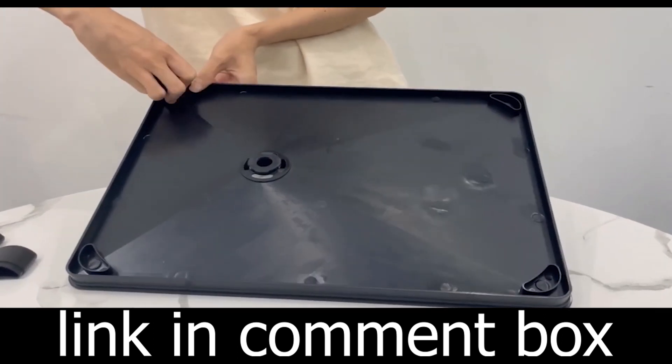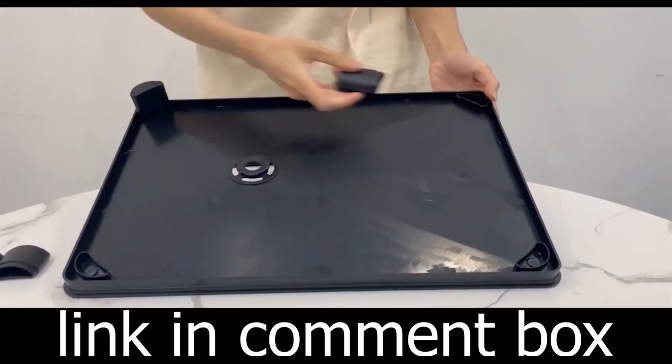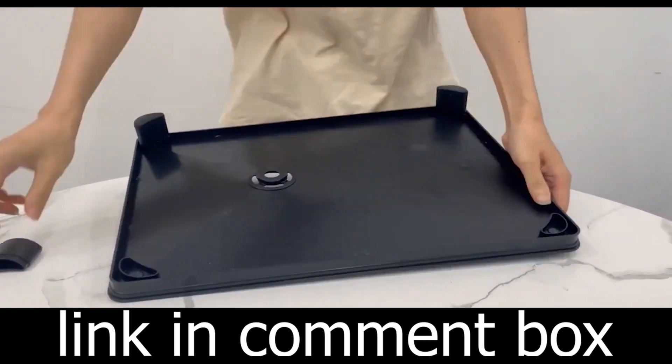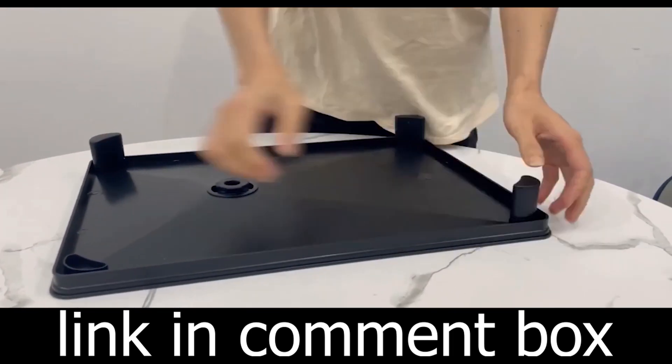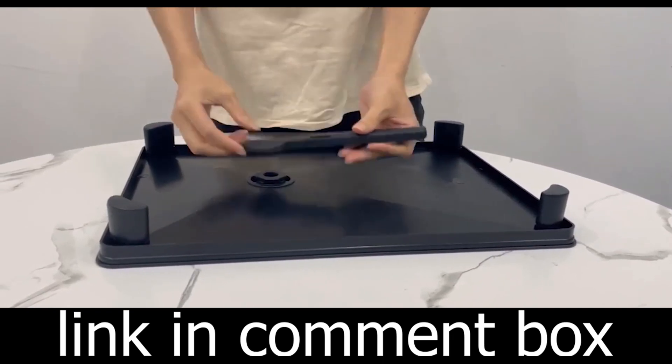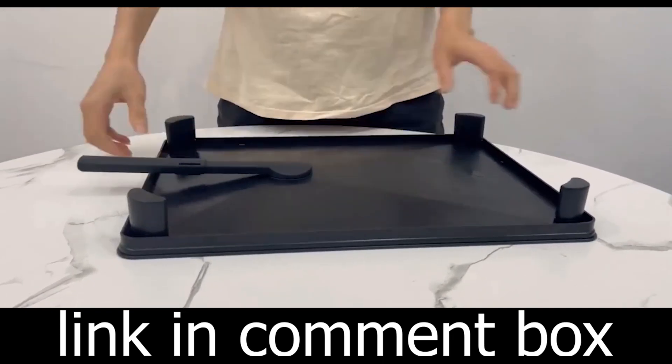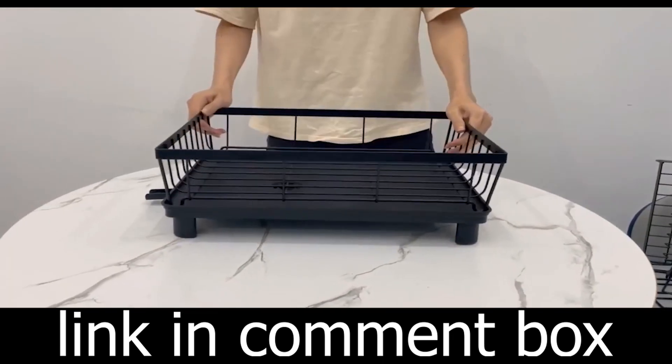Measuring at 12.2 inches in diameter, 17.3 inches in width, and 13 inches in height, this sleek black dish drying rack will fit seamlessly into your kitchen decor.